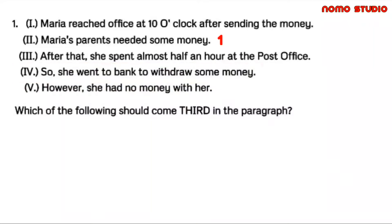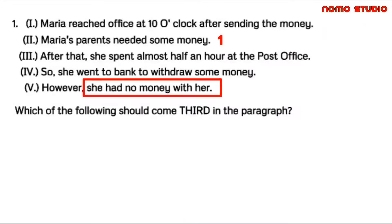But before that, why did Maria withdraw money from the bank? Maria withdrew some money from the bank since she had no money with her. So in this case, Roman numeral V will be our second sentence, followed by Roman numeral IV.